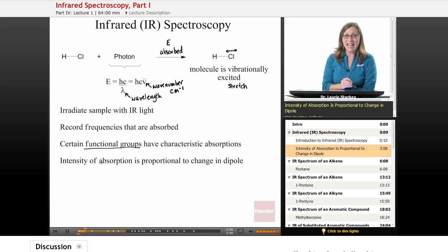The intensity of the absorption, how strongly the molecule absorbs that light, is proportional to the change in dipole. If we have a bond that is not polar, then it's not going to absorb IR light. For example, let's take a look at a more complicated molecule, like carbon dioxide.